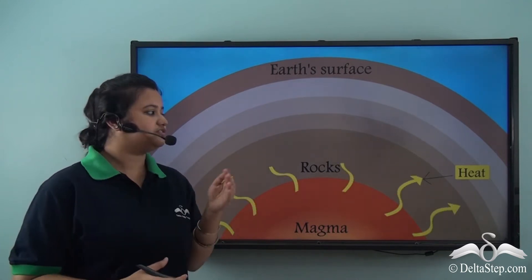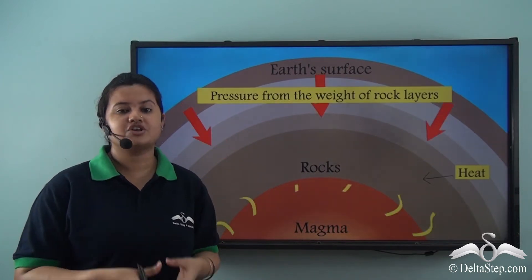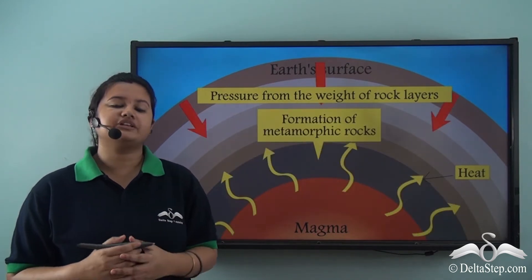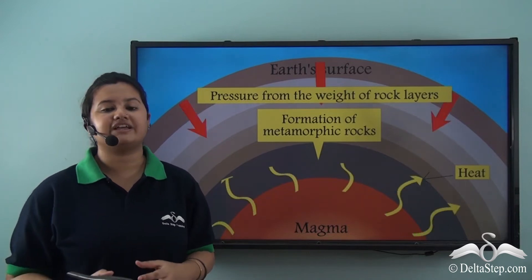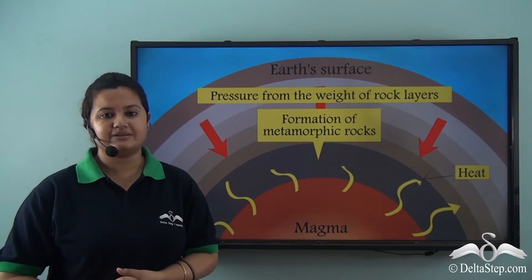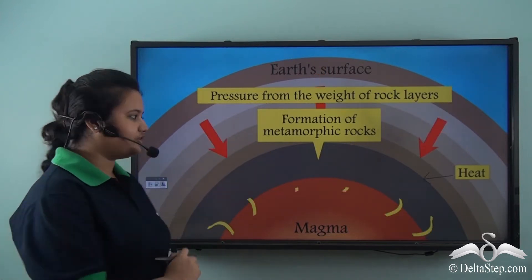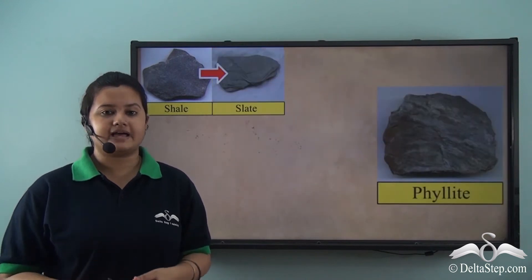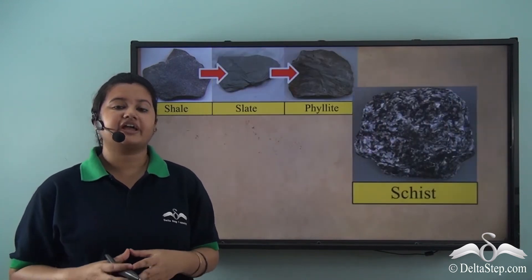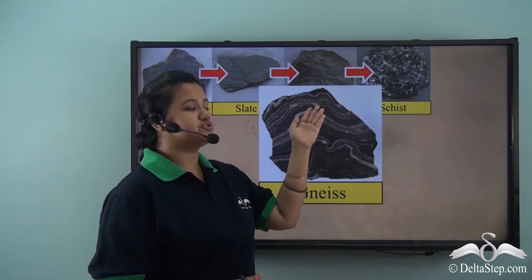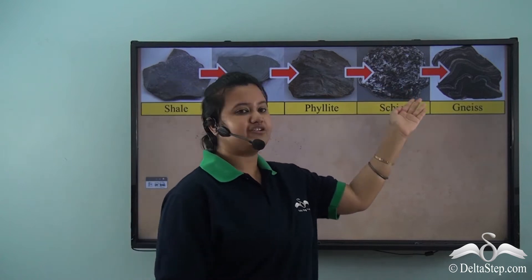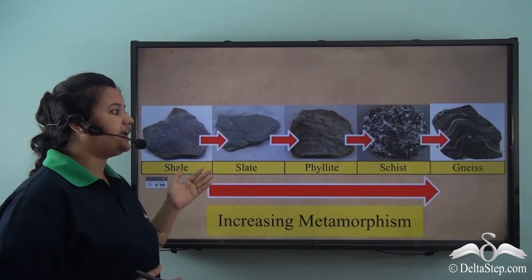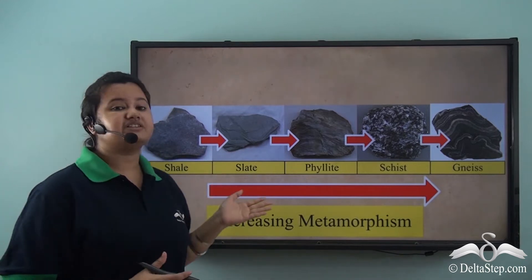Excessive heat of the earth's interior and pressure of the overlying layers of rocks alter the color, texture, and appearance of existing rocks and form new ones. This process of transformation of composition of existing rocks and formation of new ones is called metamorphosis, and the newly formed rocks are called metamorphic rocks. For example, shale, a type of sedimentary rock, gets metamorphosed into slate; slate transforms into phyllite; phyllite transforms into schist; and finally gneiss, a type of metamorphic rock, is formed. The color and texture of each rock varies due to increasing metamorphism.